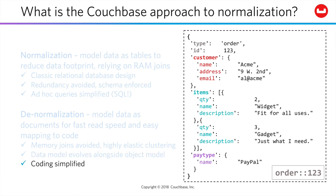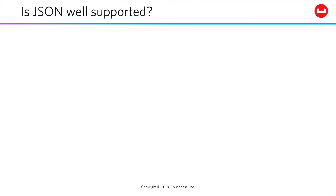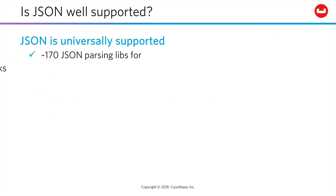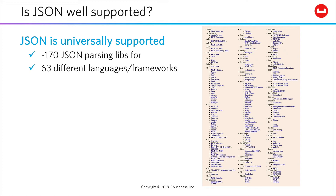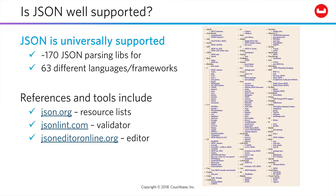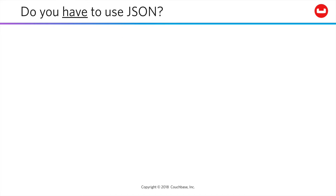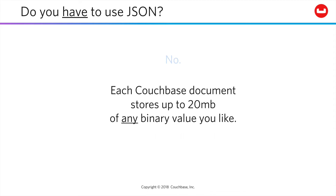As a result, coding itself, which can be the most expensive and risk-prone aspect of any project, is simplified. Now, JSON itself is everywhere. There are parsing libraries for virtually every language, tons of excellent resources online, and it's even been standardized with an RFC. But do you have to use JSON with Couchbase? No. You can store any binary value up to 20 megabytes as a single Couchbase document. So you can serialize objects, or even store XML if you're into that sort of thing.